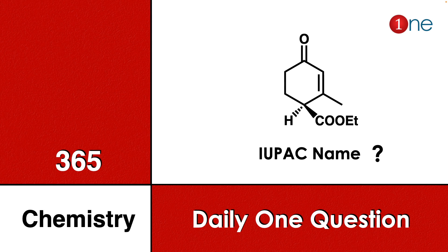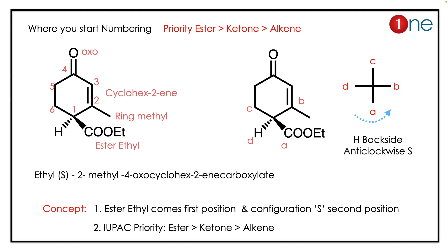Welcome to One Chemistry. This is the 365 Chemistry Series — one daily question for you. Here, cyclohexene is given, which is attached with a ketone and an ester. The ester and hydrogen positions are stereochemically specified, and there is a side methyl group. You have to find the IUPAC name of the compound, which has many functional groups.